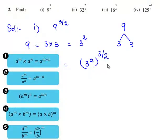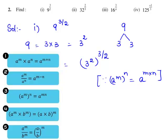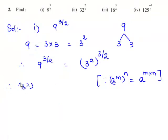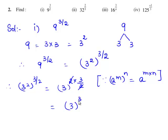As we know, if a power is raised to a power, then we need to multiply the exponents — that is, a power m, whole power n, can be written as a power m times n. Therefore, 3 squared whole power 3 by 2 can be written as 3 power 2 times 3 by 2. The common factor 2 gets cancelled and we are left with 3 to the power 3, which is 3 times 3 times 3. Since 3 times 3 is 9 and 9 times 3 is 27, therefore 9 raised to the power of 3 by 2 is equal to 27.